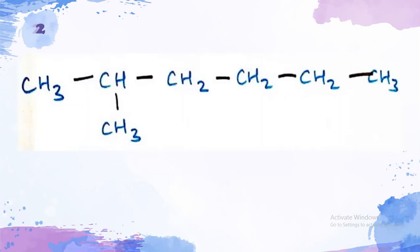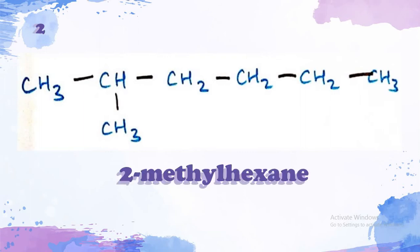Let's move into the second isomer. The second isomer has a methyl branch at the second carbon atom of its main chain which is a hexane. So, it's called 2-methyl hexane.